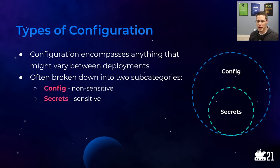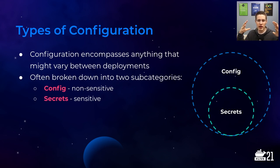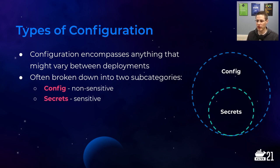Configuration is composed of two main ideas. Config encompasses anything that might vary, and then you'll hear 'secrets' — what's the difference? Think of secrets as anything that's sensitive: database credentials, API keys, etc. While config is everything that will vary, secrets are a subset of your overall config because they're still varying based on the deploy, but they need to be treated with a little more care. Secrets are a subset of your overall config but need to be handled differently.